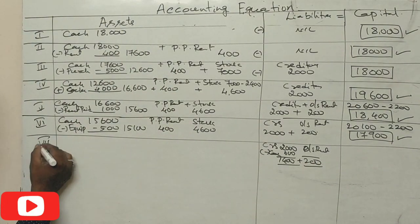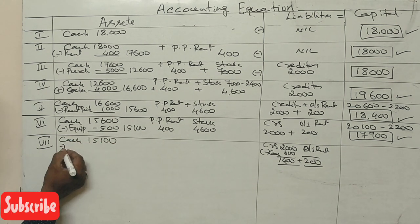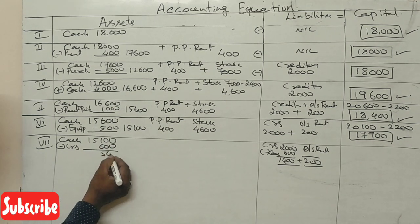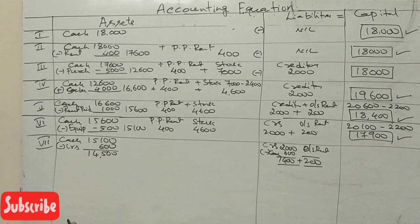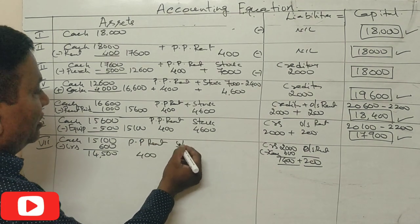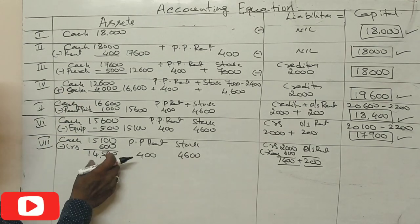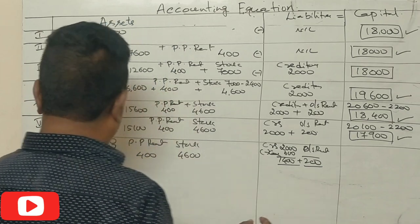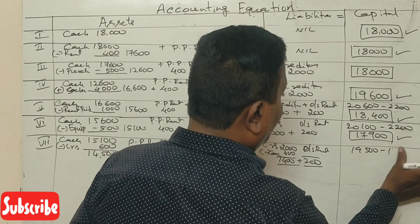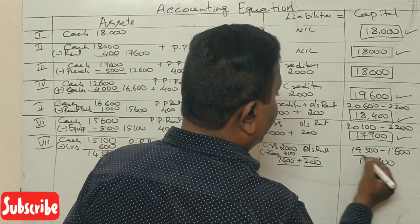Seventh transaction result: cash ₹15,100 minus creditor payment ₹600 = ₹14,500. Wait — cash is ₹15,100. Prepaid rent ₹400, stock ₹4,600, equipment ₹500. Total assets ₹19,500. Creditors reduce to ₹1,400 (₹2,000 minus ₹600). Outstanding rent ₹200. Capital ₹17,900.